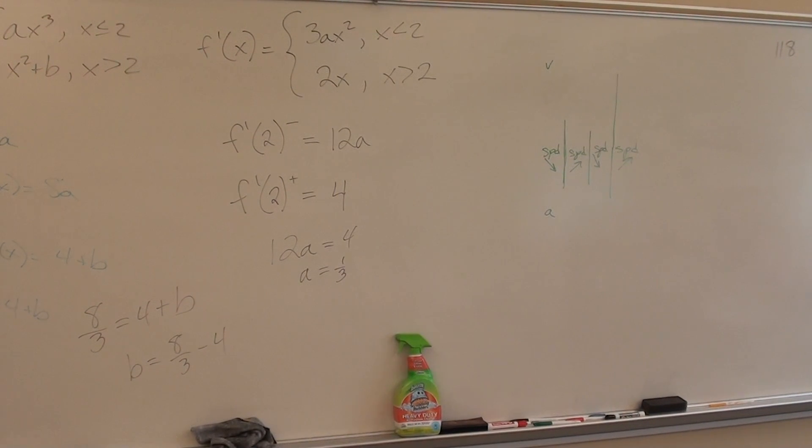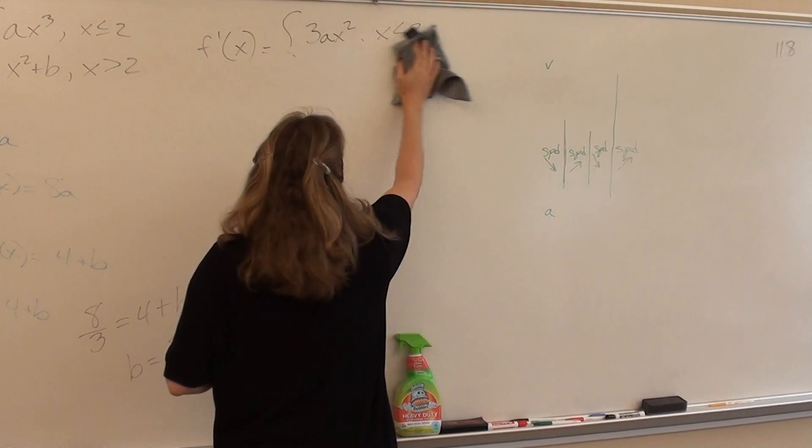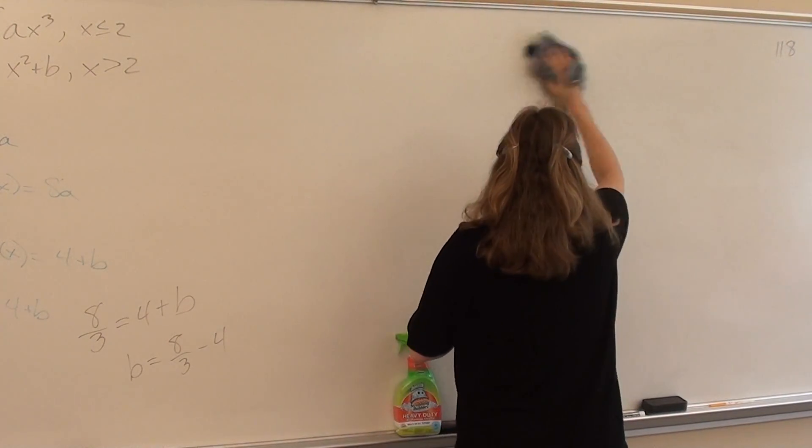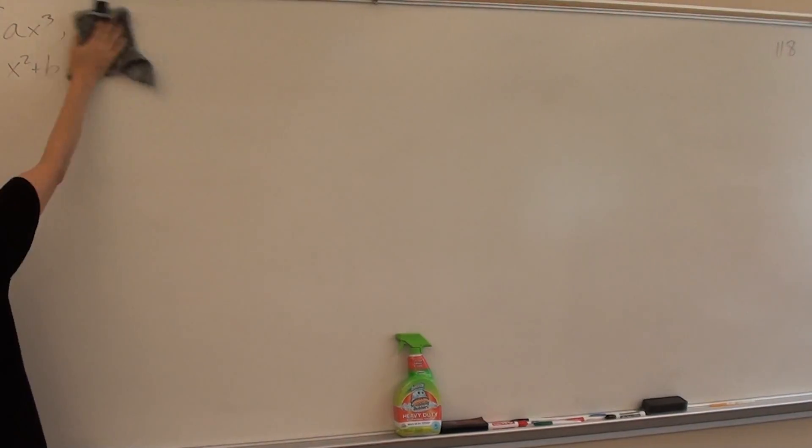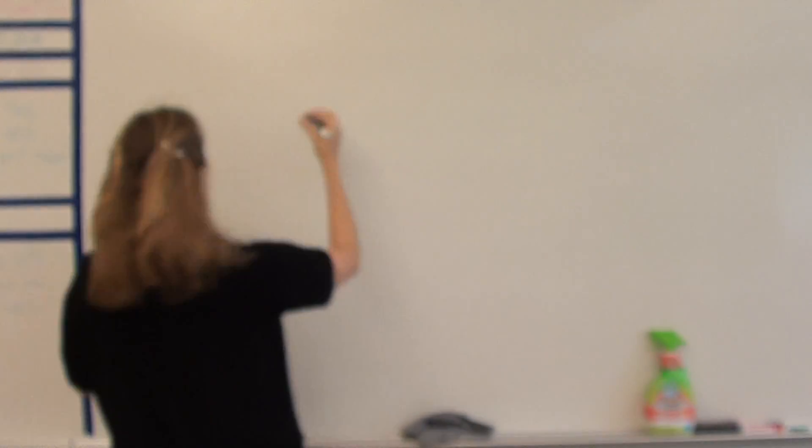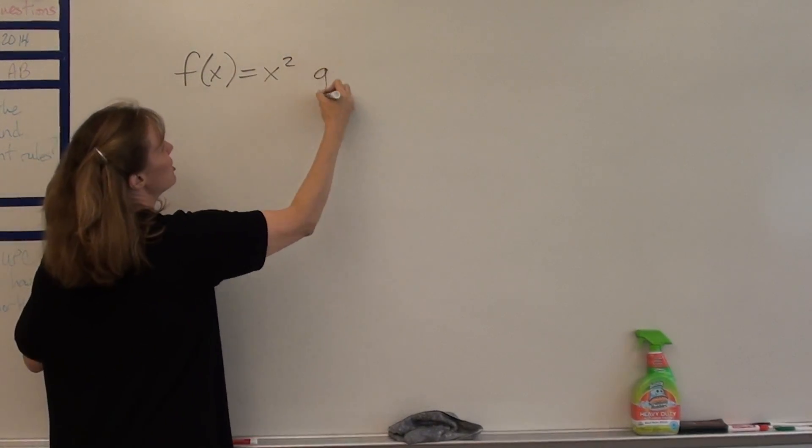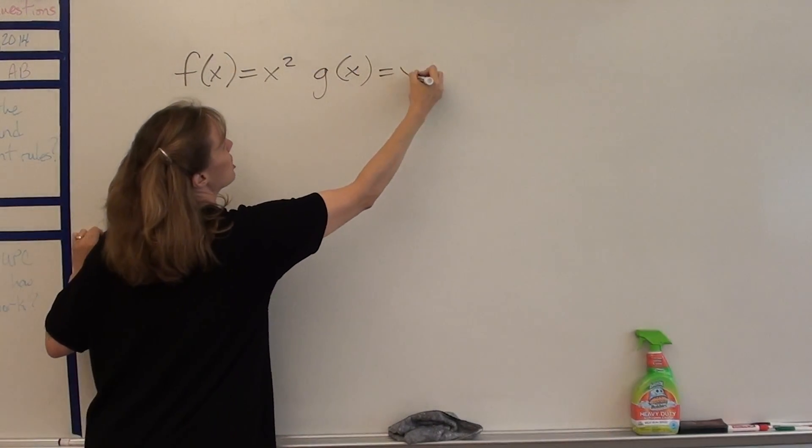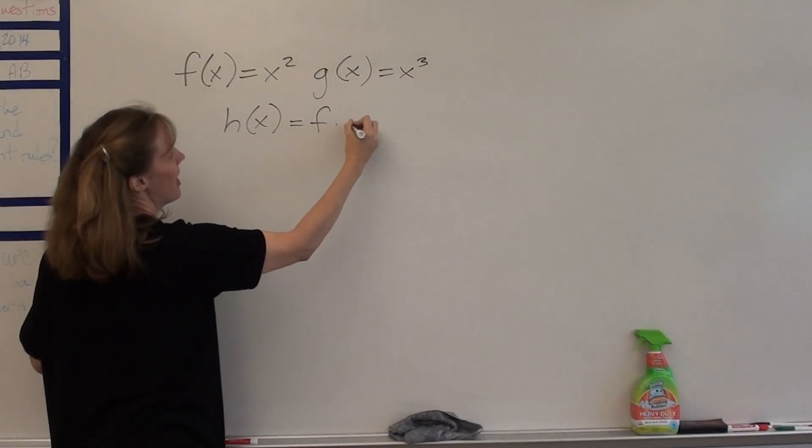Okay, so this is Section 2-3, Product and Quotient Rules, and we're going to start with Product Rule. I'm going to start very quickly by asking you guys to do the following quick example. Suppose f(x) is x², and g(x) is x³, and suppose h(x) equals f times g.